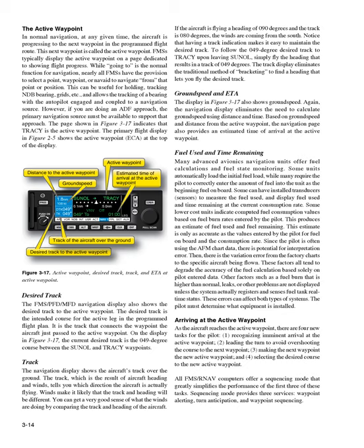Some lower cost units indicate computed fuel consumption values based on fuel burn rates entered by the pilot, producing an estimate of fuel used and fuel remaining. This estimate is only as accurate as the values entered by the pilot for fuel on board and the consumption rate. Since the pilot is often using the AFM chart data, there is potential for interpretation error. Then there is the variation error from the factory charts to the specific aircraft being flown. These factors all tend to degrade the accuracy of the fuel calculation based solely on pilot-entered data. Other factors such as a fuel burn that is higher than normal, leaks, or other problems are not displayed unless the system actually senses fuel tank real-time status.